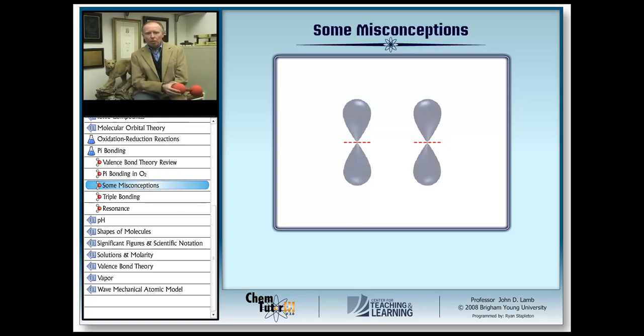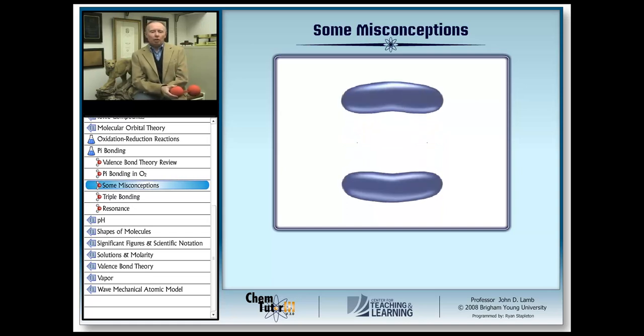That node is a place where the electron density is zero. Or put another way, that node is a place where the standing electron wave has zero amplitude.